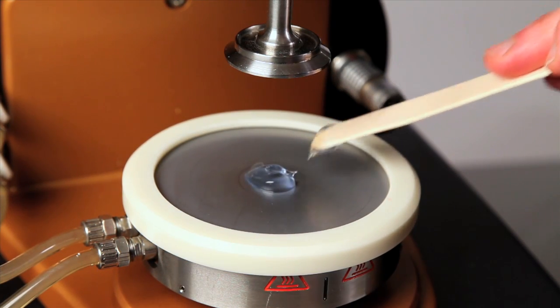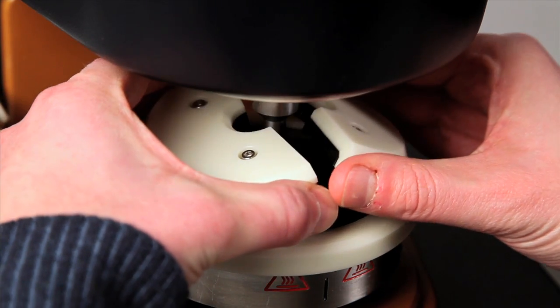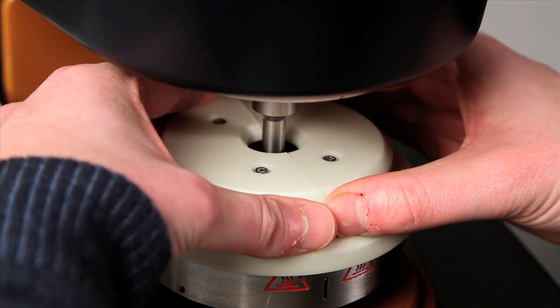After loading the sample as usual, you just have to fit in place the two halves of the solvent trap cover, without worrying about touching any part of the geometry. You are now ready to start your experiment.